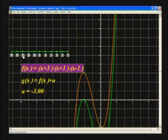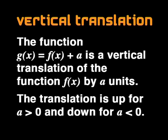Let's summarize what we have done. Vertical translation: The function g of x equals f of x plus a is a vertical translation of the function f of x by a units. The translation is up for a greater than 0 and down for a smaller than 0.